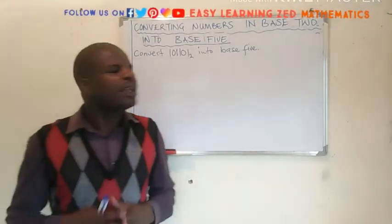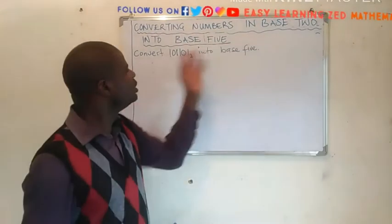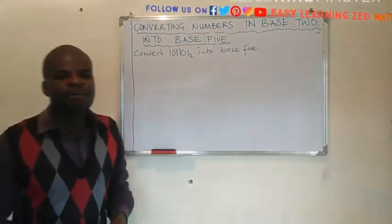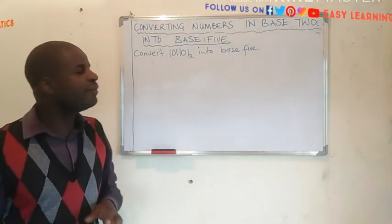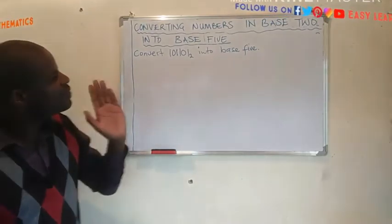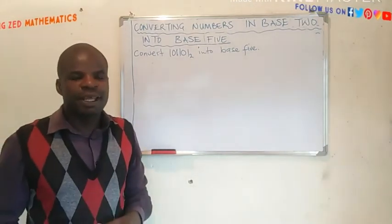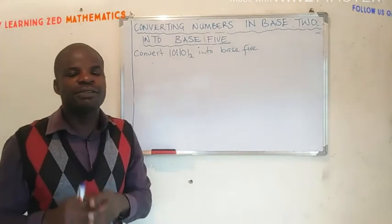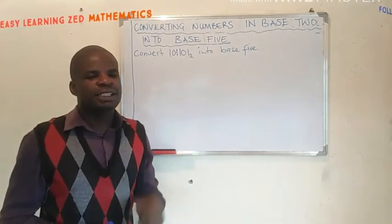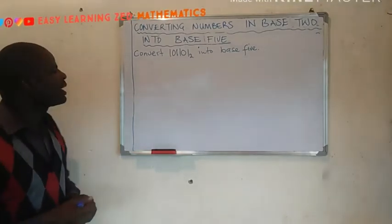Welcome to today's lesson. In this lesson, we're going to look at converting numbers in base 2 into base 5. When you're converting numbers which are in base 2 into base 5, you're going to first convert the numbers which are in base 2 into base 10, then thereafter, you convert that number into base 5. Let's get into today's lesson so that I demonstrate what I'm saying.